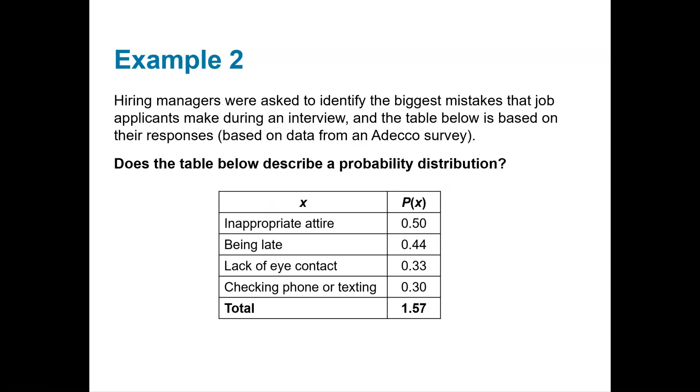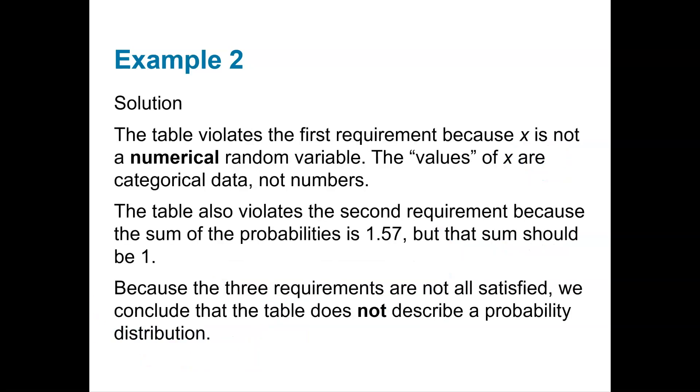We're going to do one more example. Hiring managers were asked to identify the biggest mistakes that job applicants make during an interview, and the table below is based on their responses. Is this a probability distribution? First, is the random variable numerical? It is not, so I already know the answer is no. But let's double check: the sum of the probabilities need to be 1—it is not. Each probability is between 0 and 1, but it doesn't matter because if you violate one criteria, it's not a probability distribution.